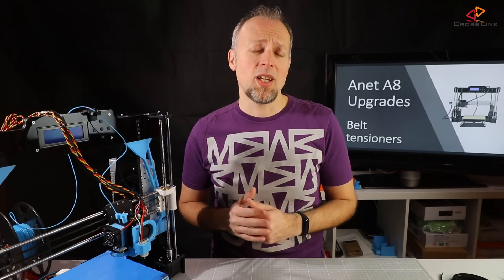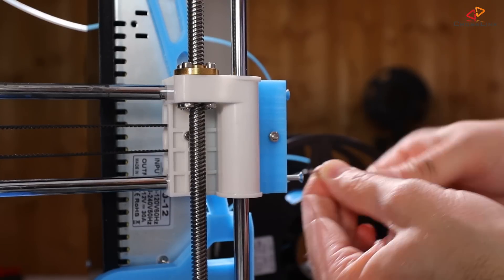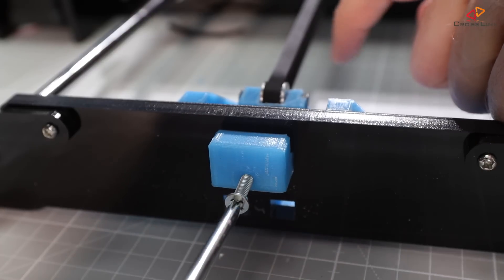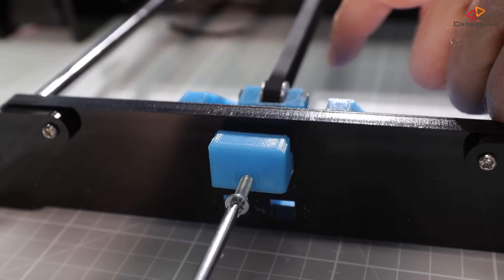And that is where the belt tensioners come into play. The tensioners make it much easier to increase or decrease the tension of any belt by just turning the tensioning screws.